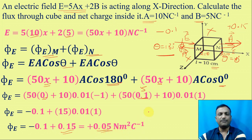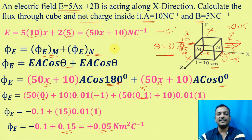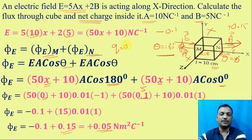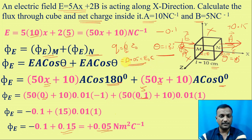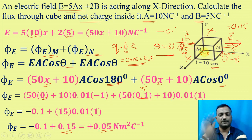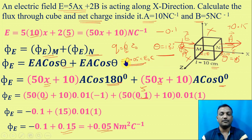So the net flux is plus 0.05 Nm². If you are asked to calculate the net charge enclosed, using Gauss's law: Q equals phi times epsilon-zero = 0.05 times epsilon-zero. The charge is positive because the net flux is positive, meaning more flux exits than enters.